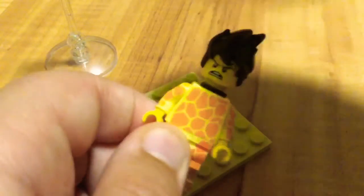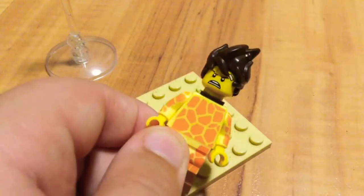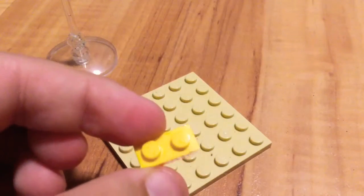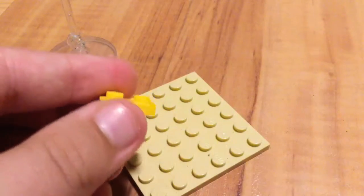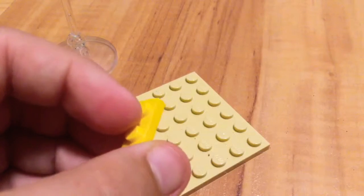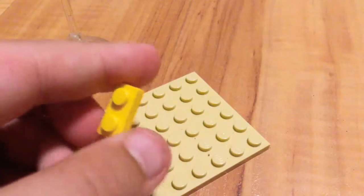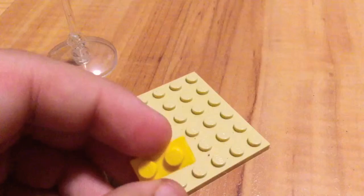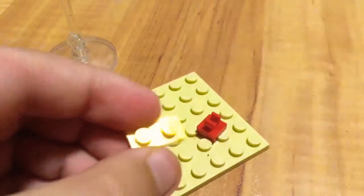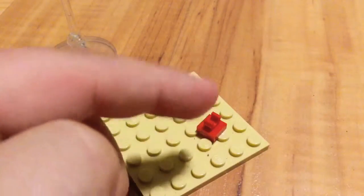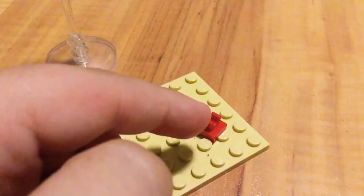Now you need this one by two yellow piece. I can't remember the name of it. I think it's just one by two, so you're just gonna need this. Now you're gonna need this piece over here, which is red. I don't know the name of this. By the way, this is red.